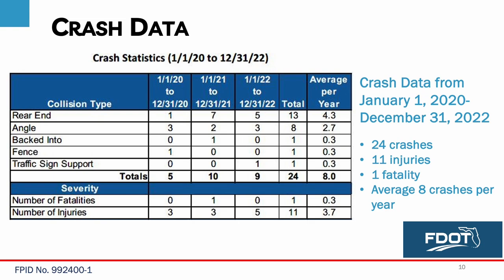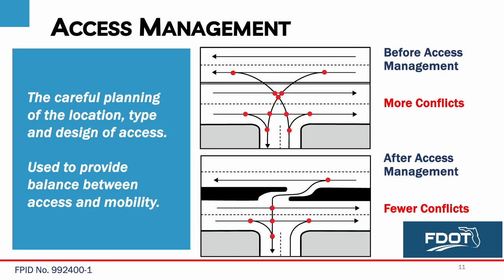The Florida Department of Transportation gathered crash data at this intersection between 2020 and 2022. Since January 2020, there have been 24 crashes, resulting in 11 injuries and one fatality — an average of eight crashes per year. One of the most important responsibilities of FDOT is to ensure that the design of each state road properly balances access and mobility. Access management, the regulation of intersections and median openings, is used to provide this balance. A basic principle of access management is to limit the number of conflict points — locations where the paths of two vehicles can legally cross — since each conflict point is a location where a crash can occur.